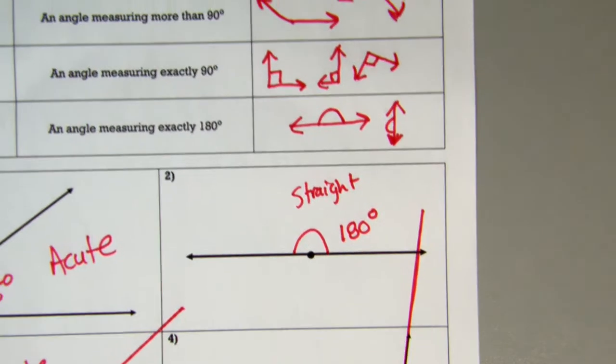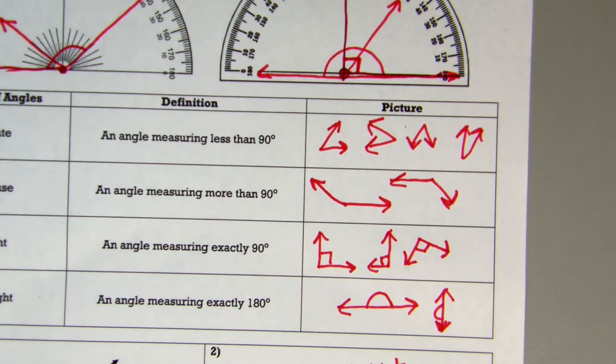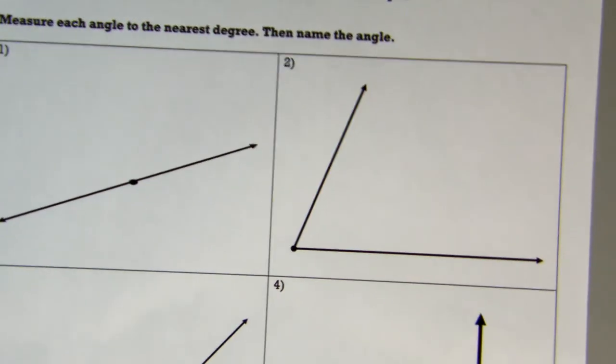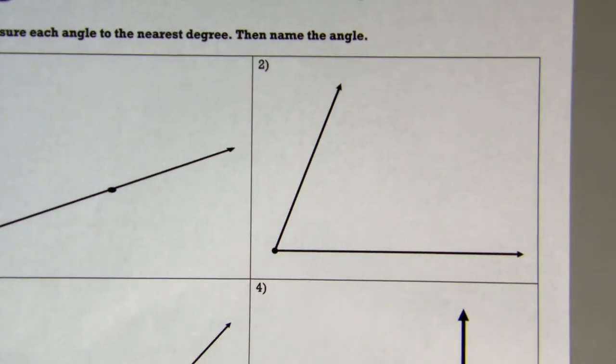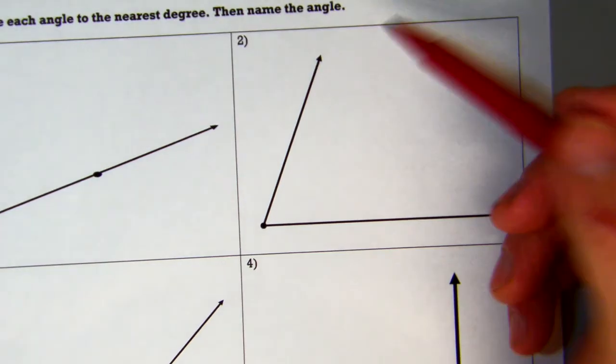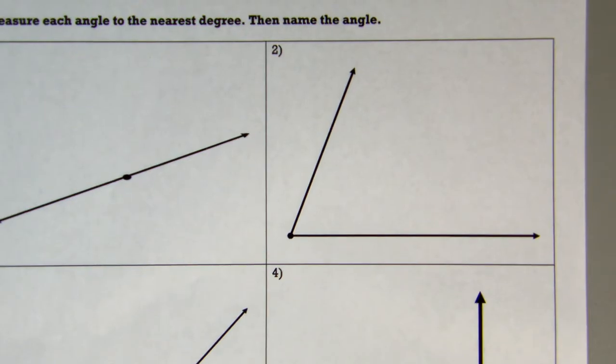So those are your angles. What I want you to go ahead and do now is you guys should have on the other sheet, you should have a you-try spot. So make sure you go ahead and pause it. Measure all of your angles with your protractor. If you need to extend out any lines, make sure you do that. And then you also have to make sure you name the angles as well. Are they straight, obtuse, right, or acute? So go ahead and pause your video and try those.